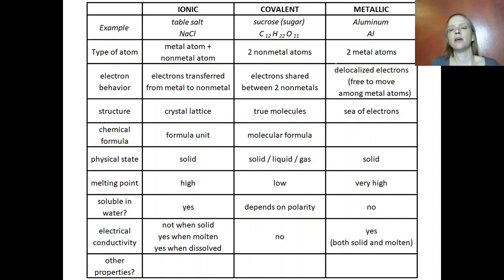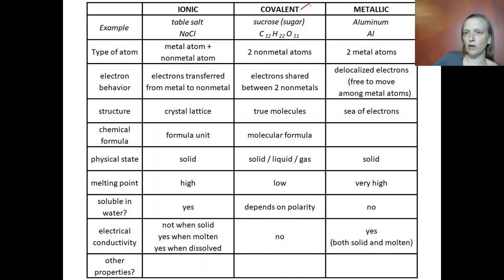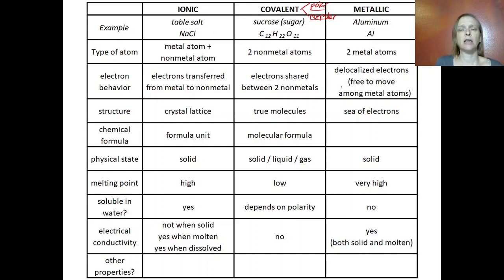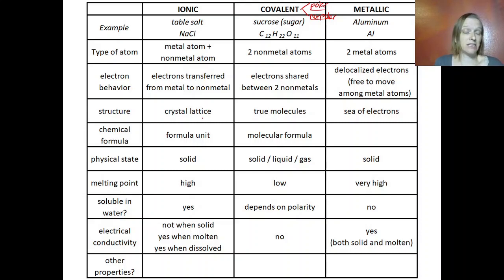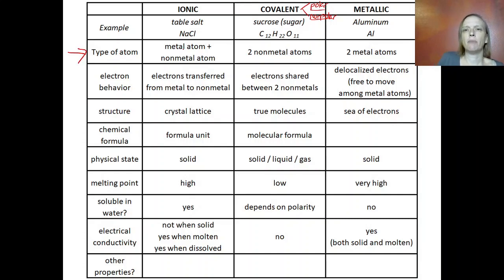We can summarize the three types of bonding: ionic, covalent, and metallic — though for covalent we also learned about polar covalent and nonpolar covalent. Here are some similarities and differences to help you judge what type of compound you're dealing with. First, look at what types of atoms are involved: ionic compounds are between a metal and a nonmetal, covalent is between two nonmetals, and metallic bonding is between two metals.